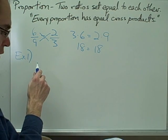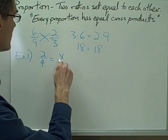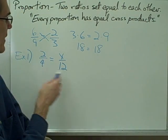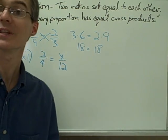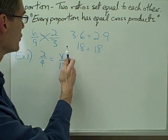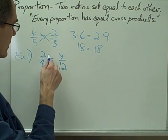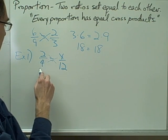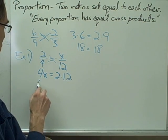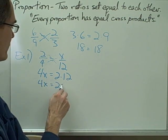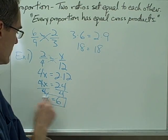Example number one on this page says 2 over 4 equals x over 12. We have a proportion — two ratios set equal to each other — but we're missing one value and we'd like to solve for x. All I need to do is use the equal cross products property. I'll cross multiply: 4x equals 2 times 12. So 4x equals 24. Divide both sides by 4 and I get x equals 6.